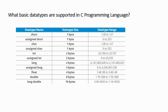Next is char, which is used to store character values. Its size is also one byte and ranges from -128 to 127. The difference from short is that short stores integer values, while char stores character values whose ASCII code can range from -128 to 127. Similarly, unsigned char is also one byte in size and stores values from 0 to 255 — that is, ASCII values from 0 to 255.